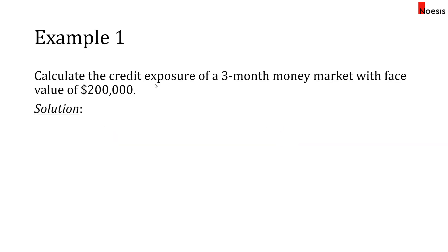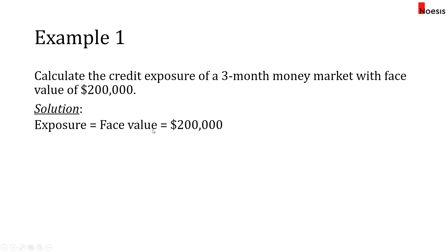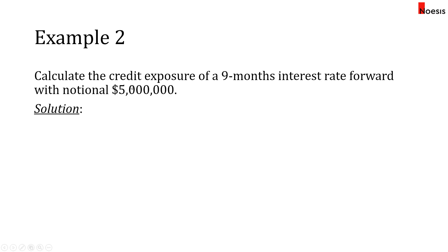Example one: calculate the credit exposure of a three-month money market with a face value of two hundred thousand dollars. This falls under cash investments, so the credit exposure is simply the amount invested — two hundred thousand dollars. The exposure is just the face value.